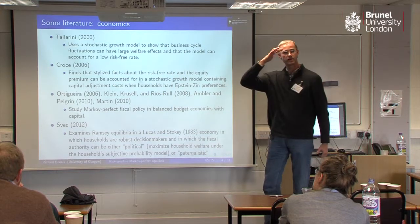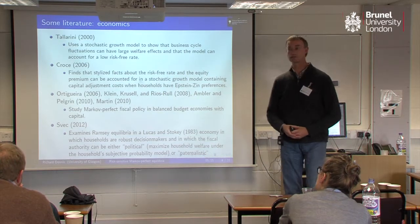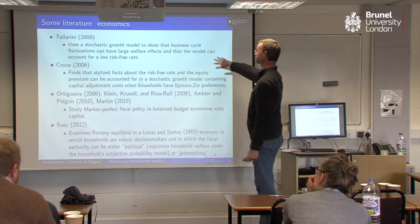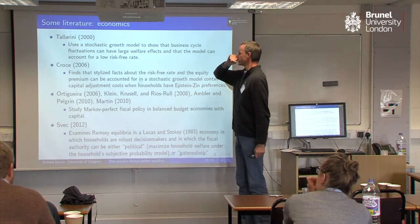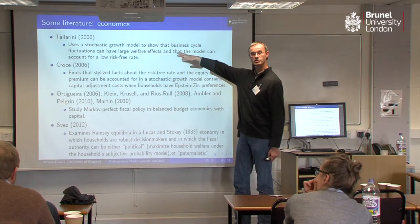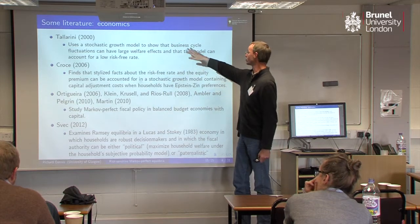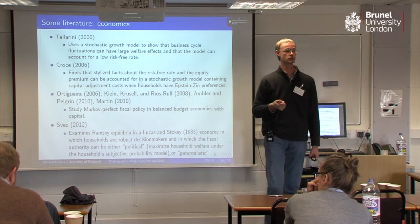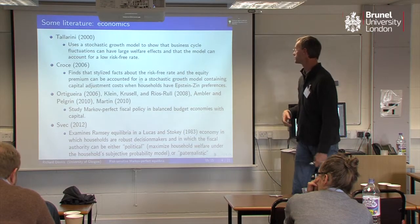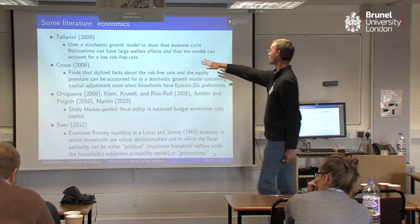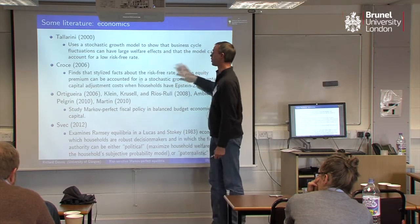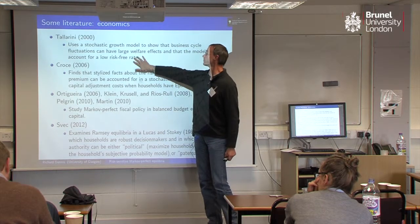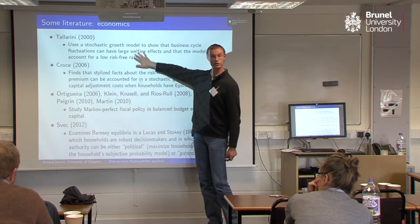The paper most closely related to this is a paper by Thomas Tallarini. What he does is he uses a standard stochastic growth model and he introduces risk-sensitive households. He shows that risk-sensitive preferences can have large welfare effects and that the model can account for a low risk-free rate. I'm going to find these results as well.